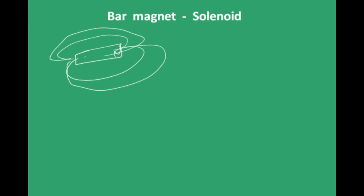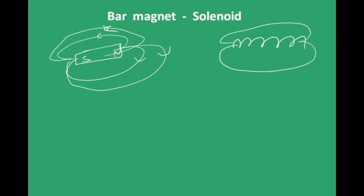A solenoid through which current is passed gives field lines similar to those of a bar magnet, so both are almost equivalent. Just as breaking a bar magnet gives two smaller magnets with weaker properties, the same is true for a solenoid.